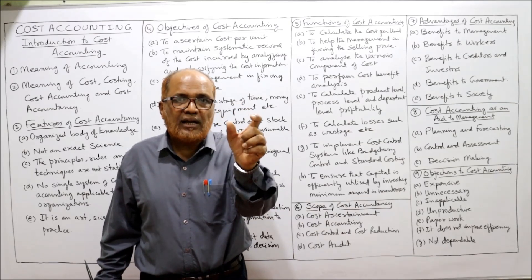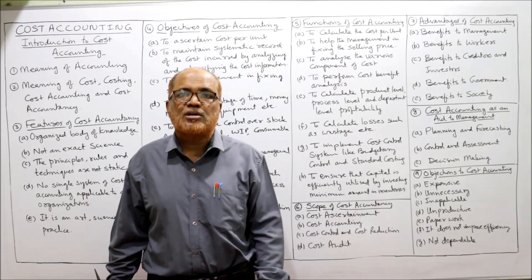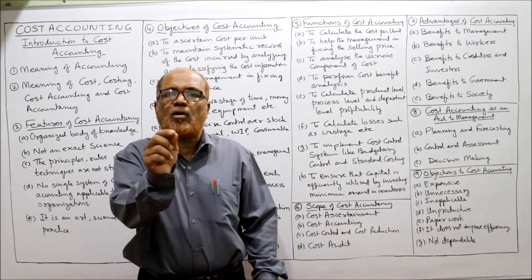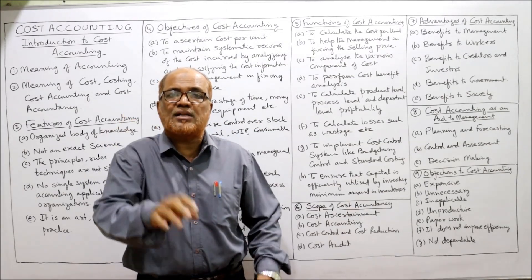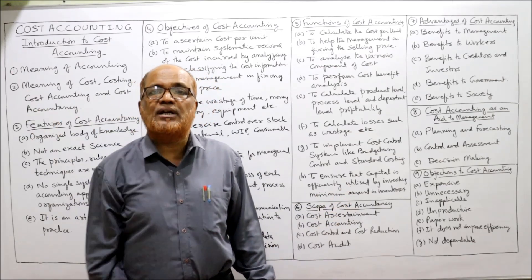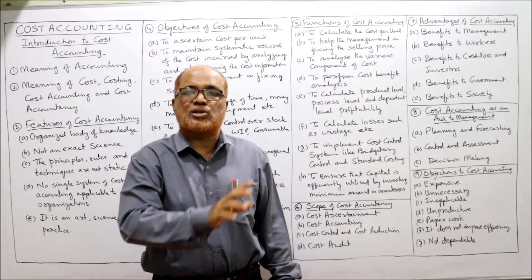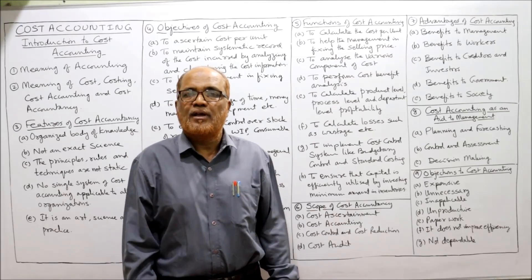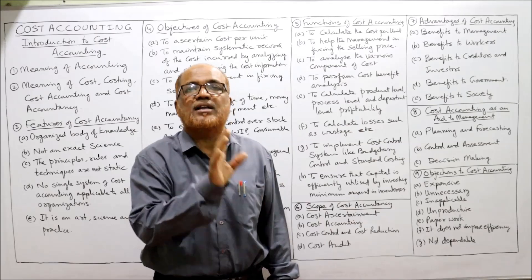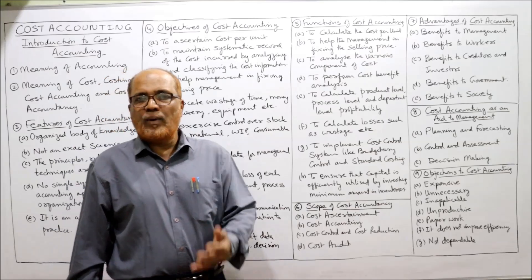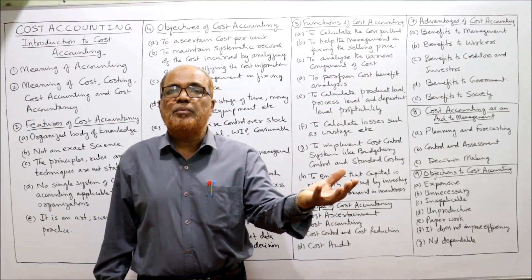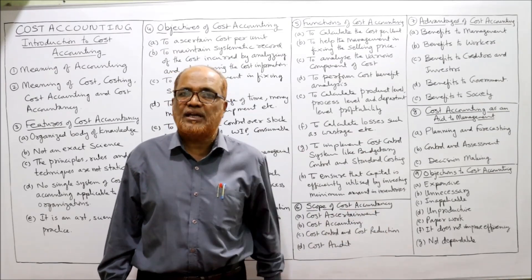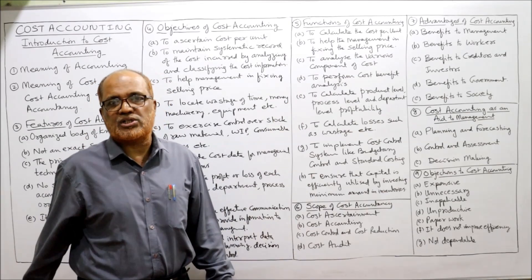After locating wastage, corrective measures can be taken to remove it and increase efficiency. Another function is to implement cost control systems. Earlier, cost accounting only dealt with historical costing, but nowadays it also covers future costing — that is, predetermined costing such as budgetary control and standard costing, which are costing methods made in advance. Lastly, to ensure that capital is efficiently utilized and a proper return on capital invested is achieved.